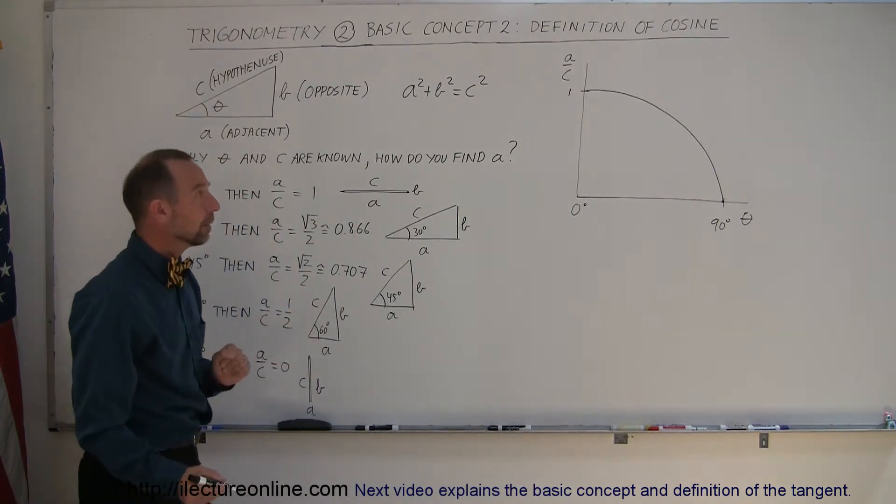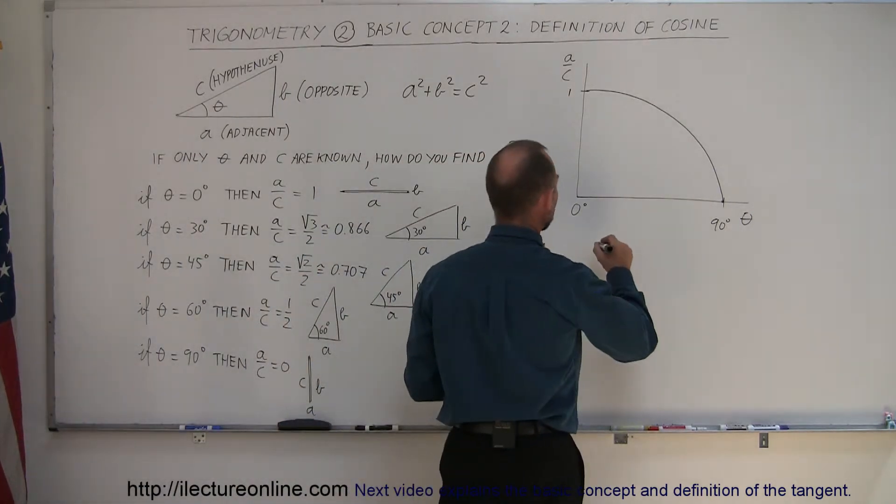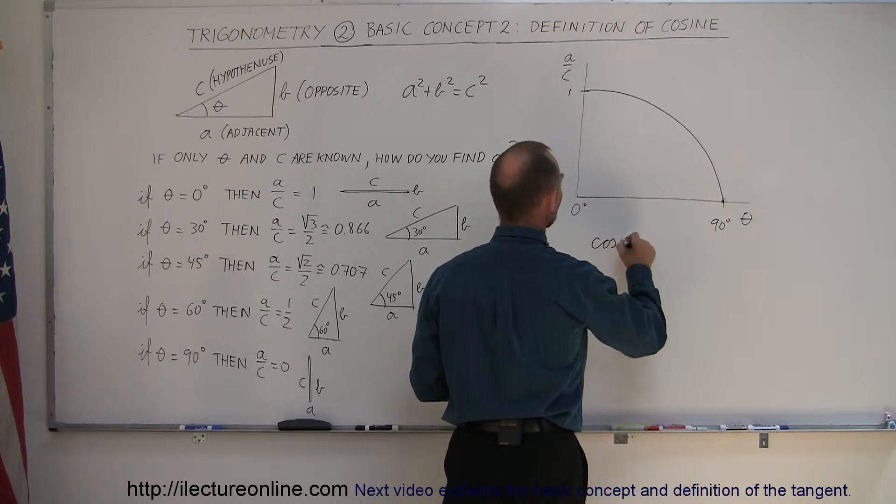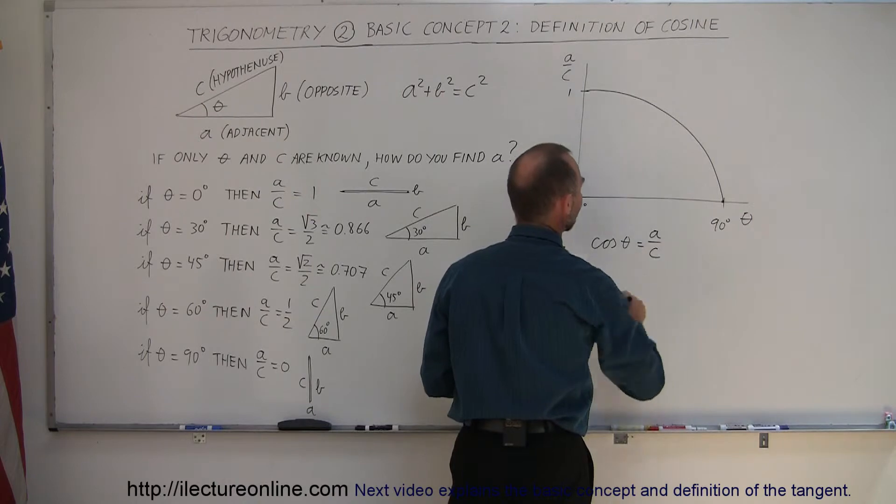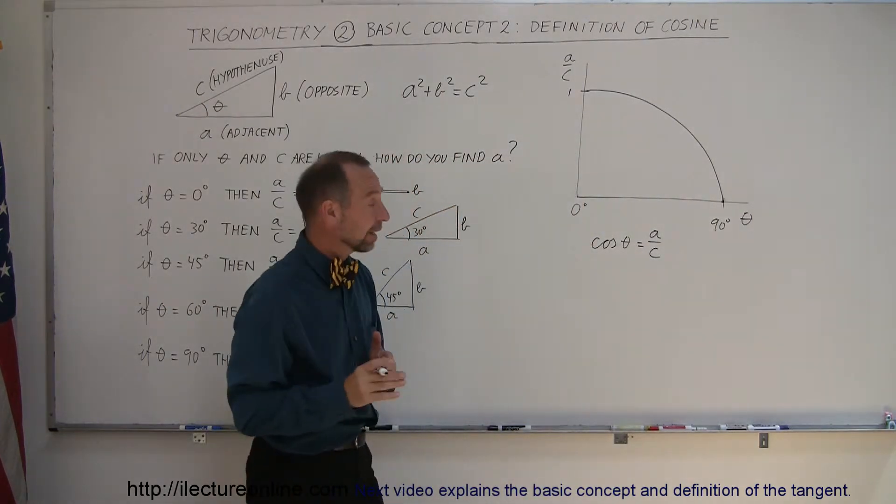In that particular relationship, that's called the cosine of the angle. So the cosine of the angle theta is equal to the ratio of the adjacent side a divided by c.